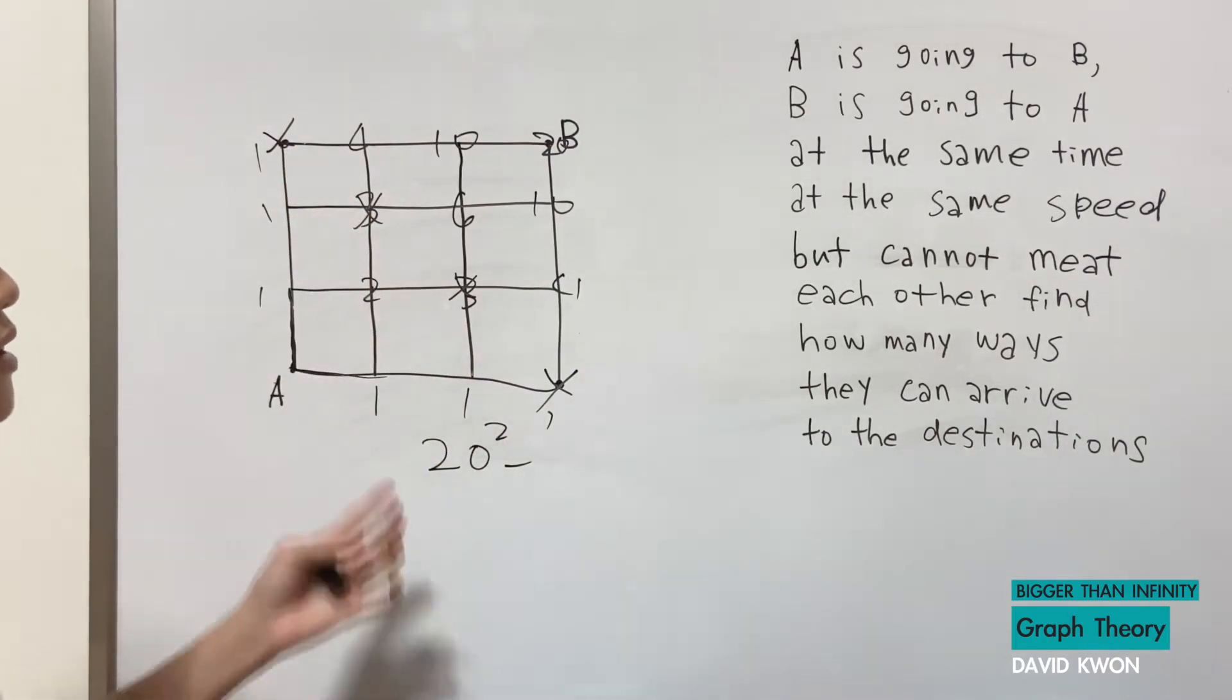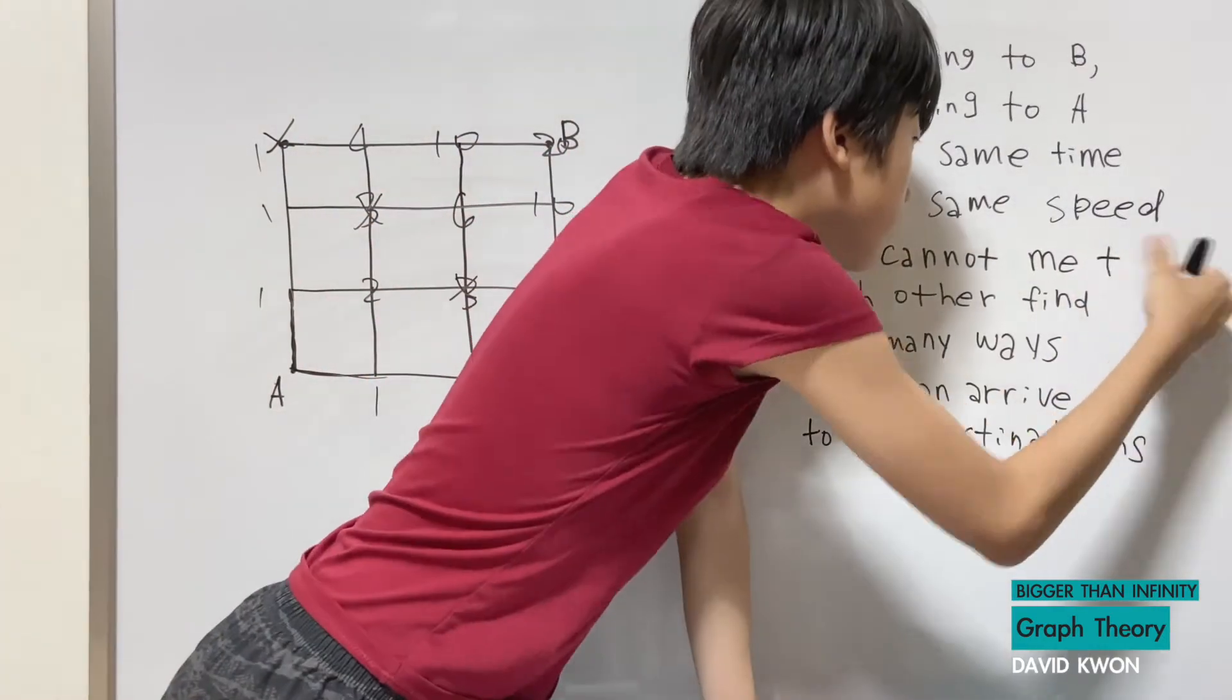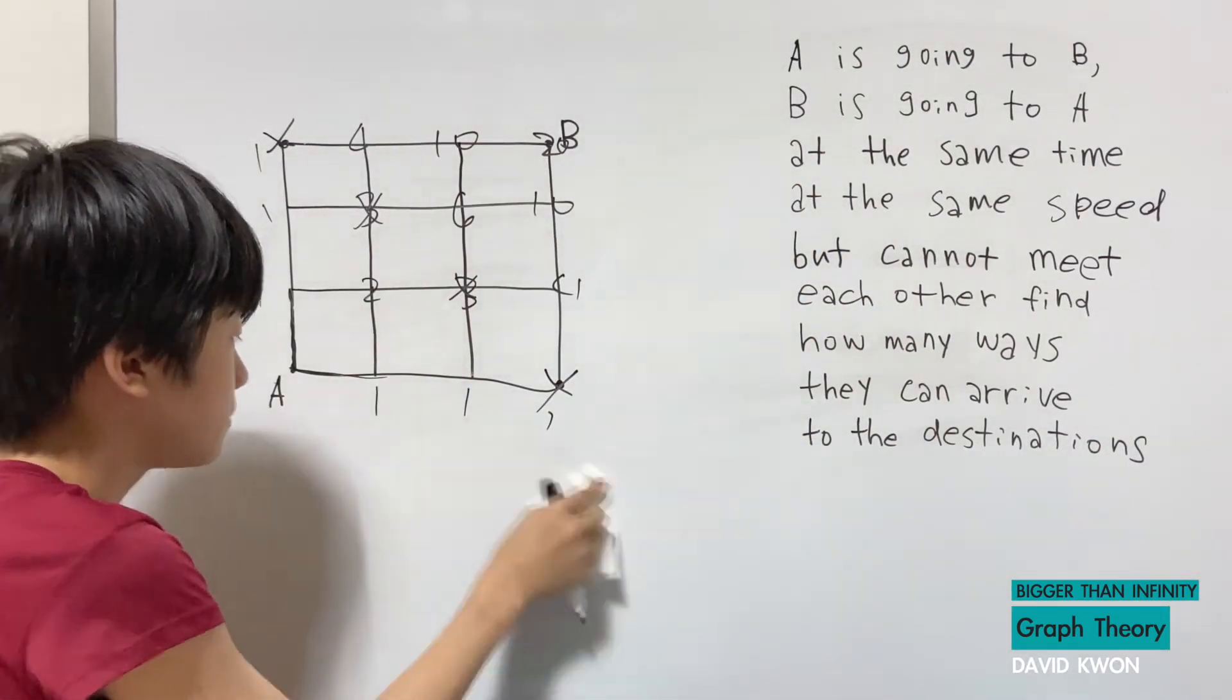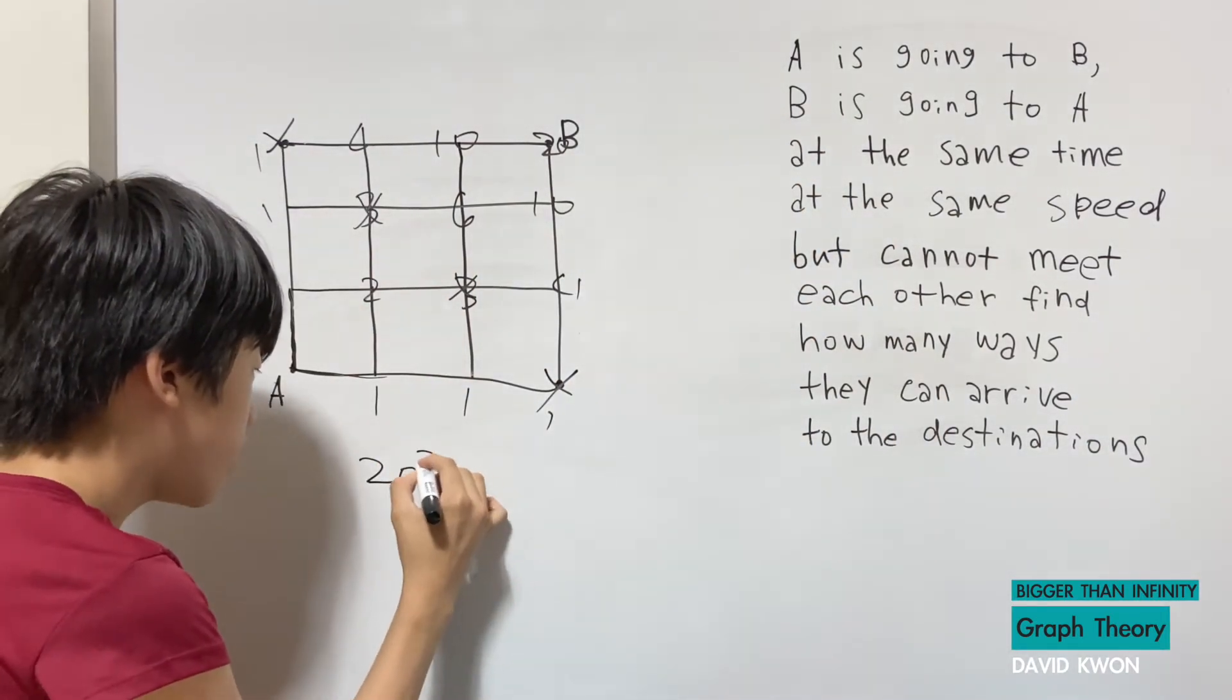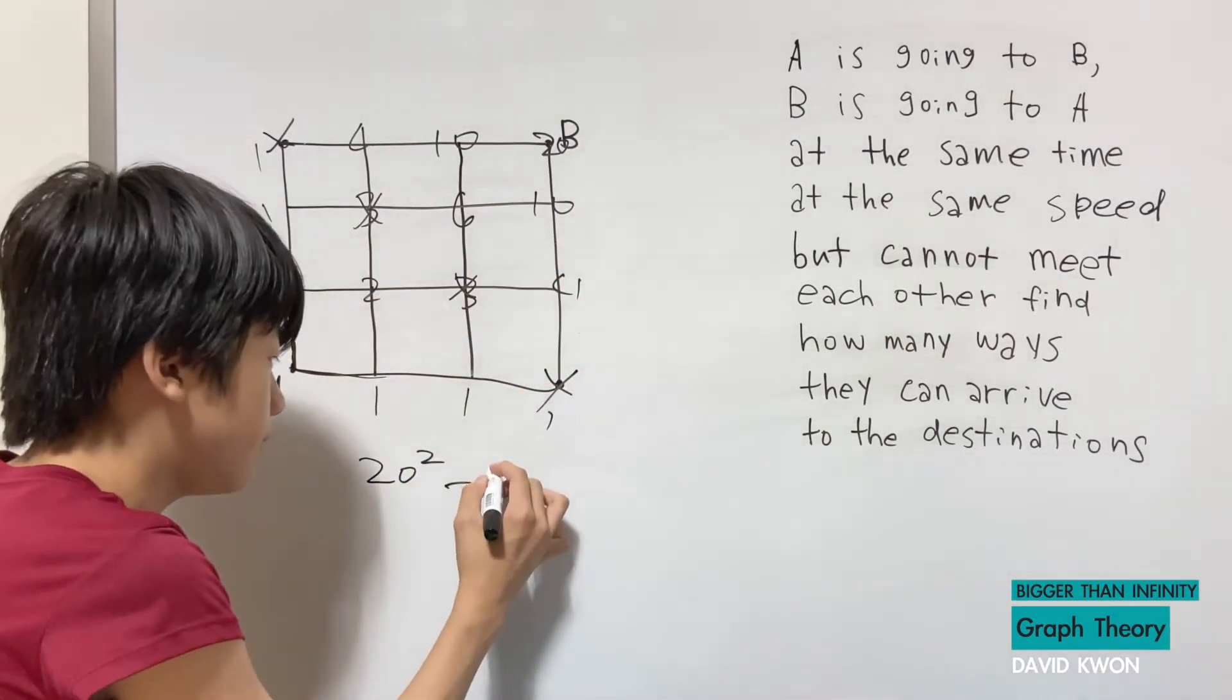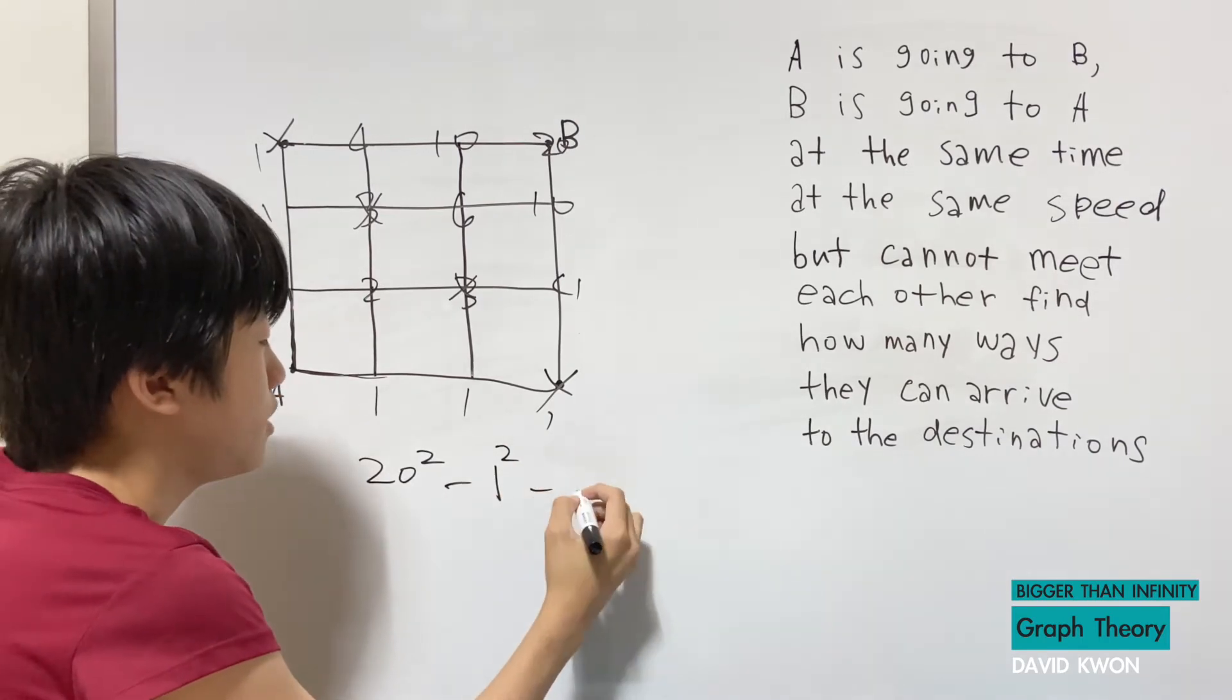then all we have left is where they can not meet. Okay so let's make this cleaner we have 20 squared minus a can go here it can go here that's one squared but that doesn't really matter minus